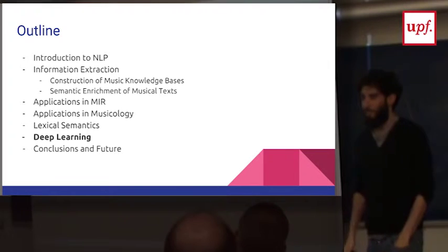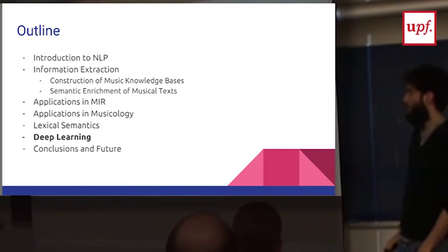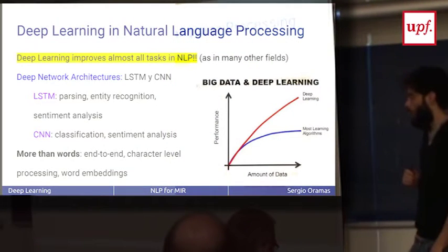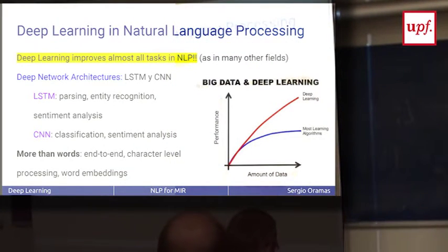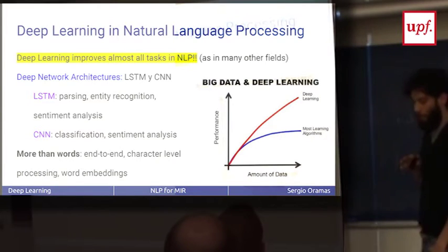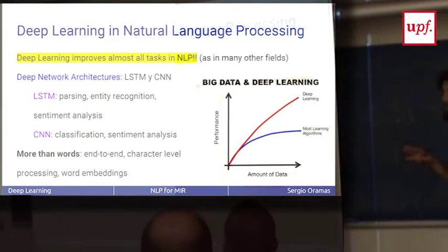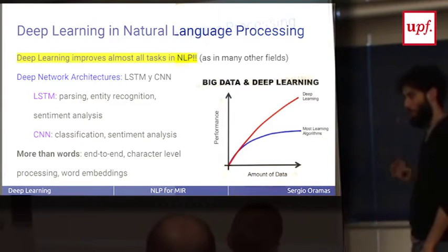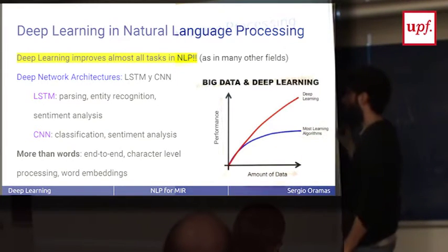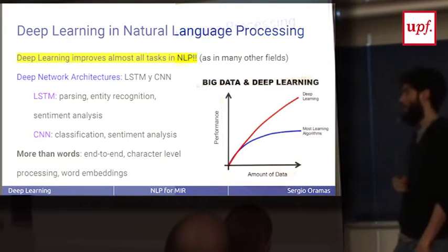Let's go to the last section, deep learning. Today I'm not going to explain deep learning, just give some examples of how we use deep learning in the approaches we saw before in MIR. First of all, deep learning improves almost all tasks in NLP as in many other fields.